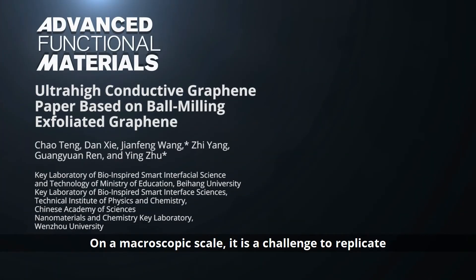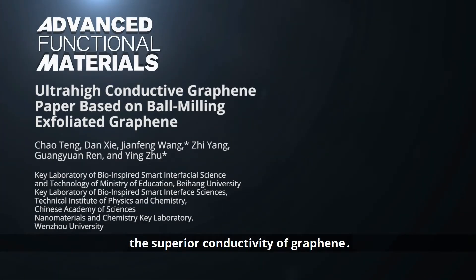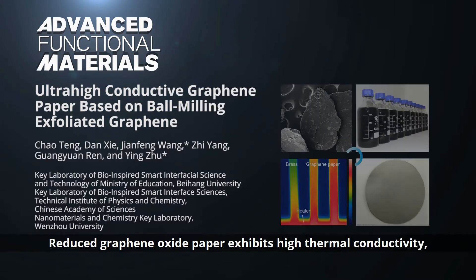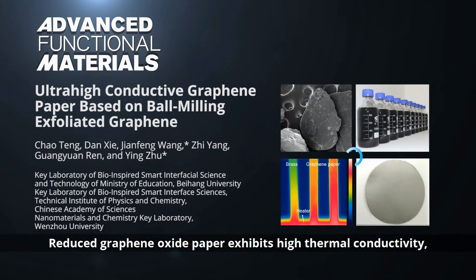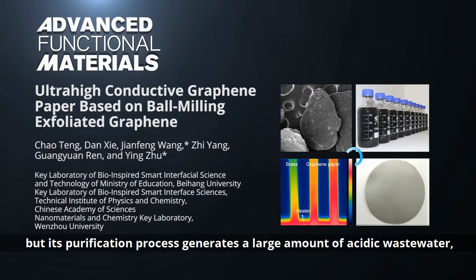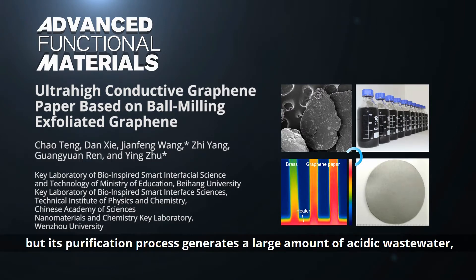On a macroscopic scale, it is a challenge to replicate the superior conductivity of graphene. Reduced graphene oxide paper exhibits high thermal conductivity, but its purification process generates a large amount of acidic wastewater, imposing a cost and environmental burden.